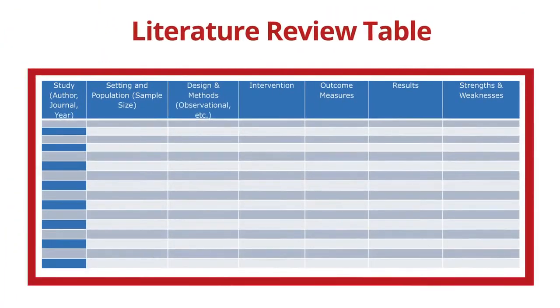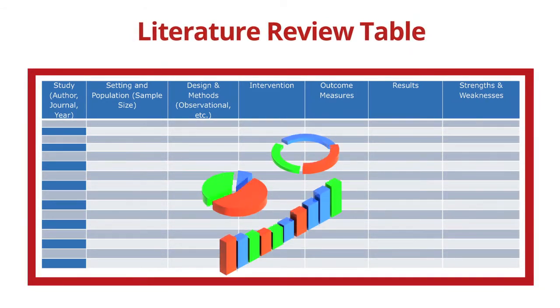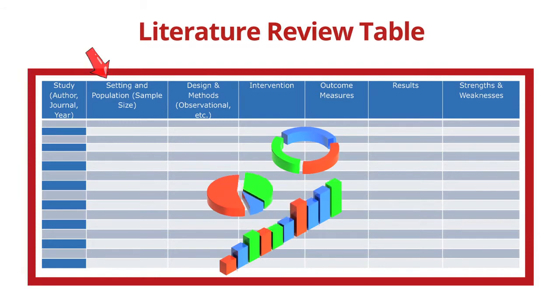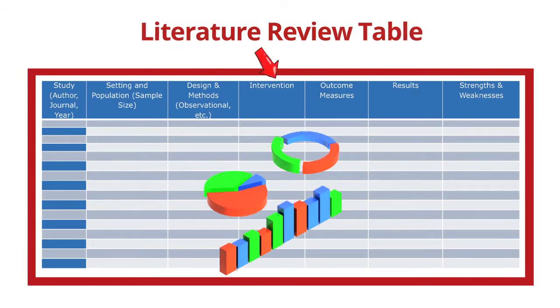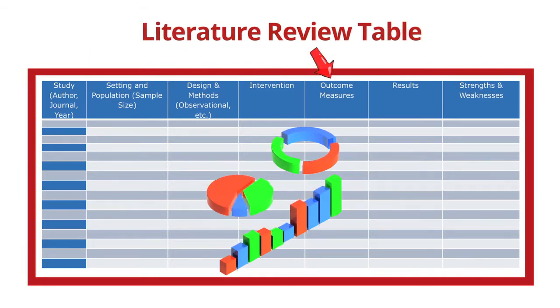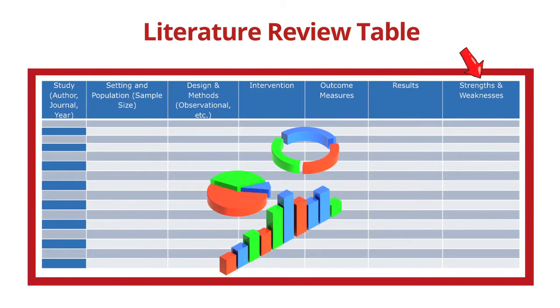Finally, here's an example of a literature review table. This will help you evaluate the cumulative evidence you've gathered, which includes each study's population, design, intervention, outcome measures, results, and strengths and weaknesses.